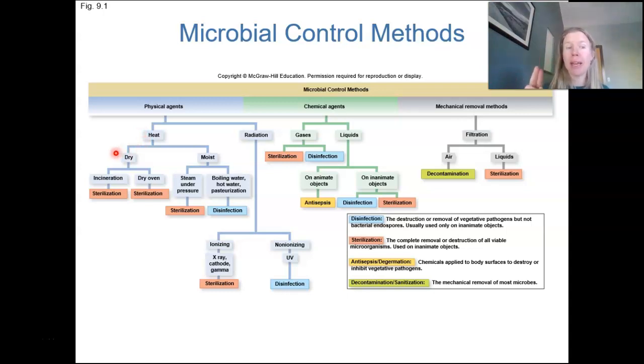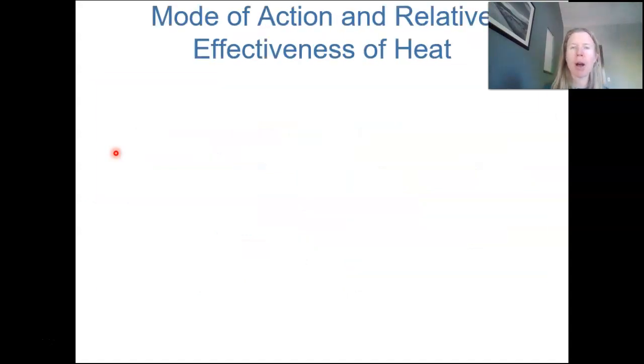Under heat, then we have two main categories, dry heat and moist heat. So this moist heat, typically we're talking about things like boiling water, hot water, steam, et cetera. Notice that moist heat actually takes way less time to kill microbes at a given temperature. So 121 Celsius, that is above boiling. If you use moist heat, it takes 15 minutes to sterilize. Completely kill everything, including endospores.